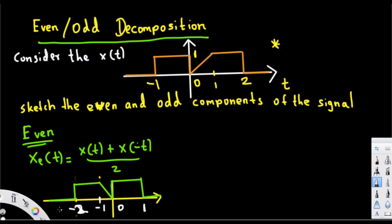Now we are going to add x(t) and x(-t) together. Looking at the interval between negative two and negative one: for x(t) we don't have anything in this area, but for x(-t) we have a rectangular pattern. When we add these two, only that rectangular pattern remains, but we are dividing the whole thing by two, so the height becomes half — 0.5.